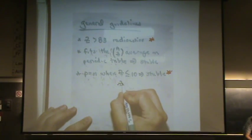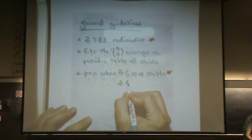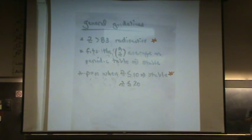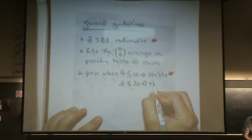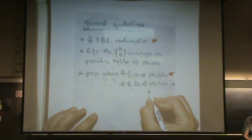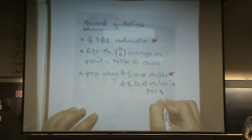Let me also say that when Z is less than or equal to 20, so going up to calcium, it's stable if P and N are even numbers.